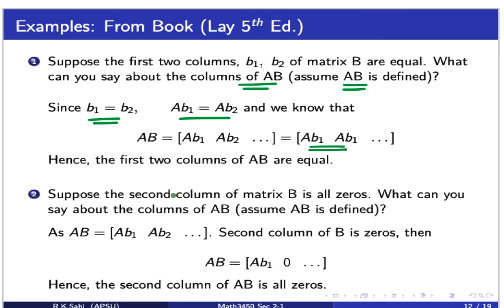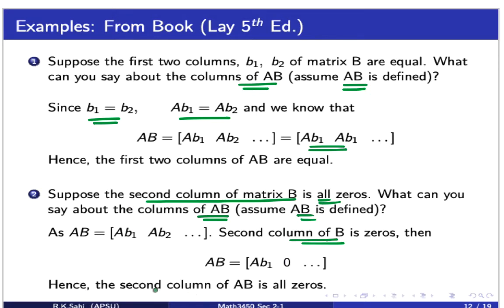Let's look at another question. Suppose the second column of matrix B is all zeros. What can we say about the columns of the new matrix AB, assuming AB is defined? By the definition, AB consists of columns AB1, AB2, and so on. Since the second column of B is the zero vector, and any matrix A multiplied by a zero vector gives a zero vector, the second column of AB is also zeros.